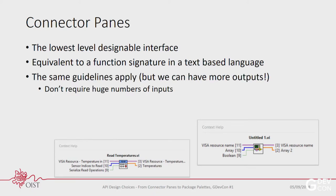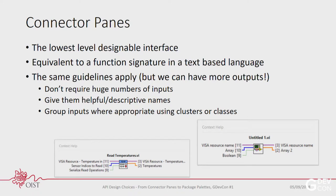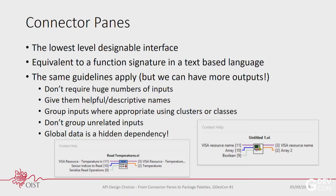Relative to text-based languages, we have the same kinds of considerations. We shouldn't require huge numbers of inputs — if you have 20 connectors, maybe that's a bad thing. We should try to give helpful or descriptive names. When appropriate, group inputs with clusters or classes, but don't just put all 20 inputs into the same cluster and call it good — don't group unrelated inputs. Also, if you use global data, this can be a hidden dependency: your things will depend on something that isn't obvious from your connector panes.